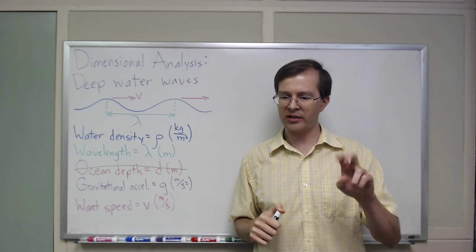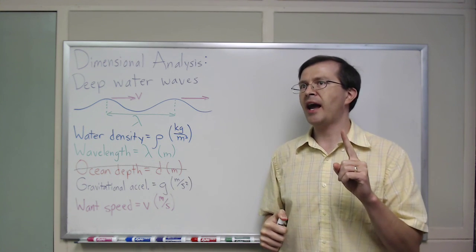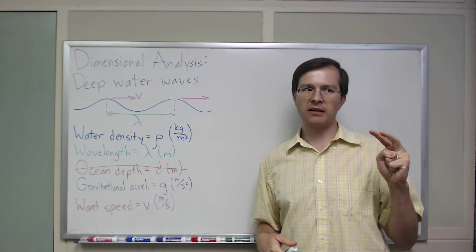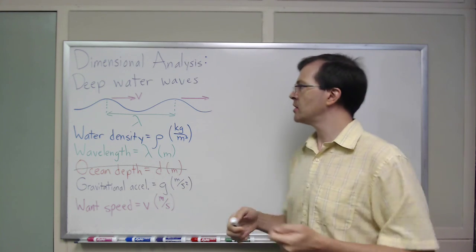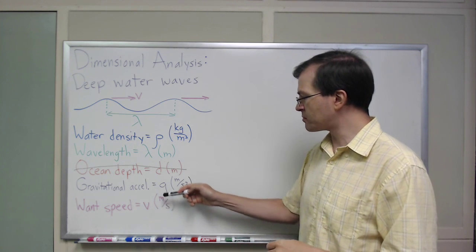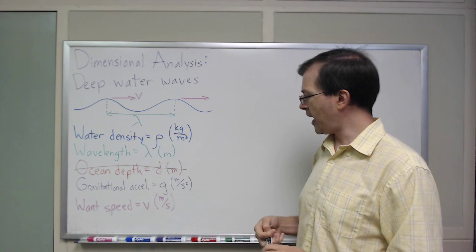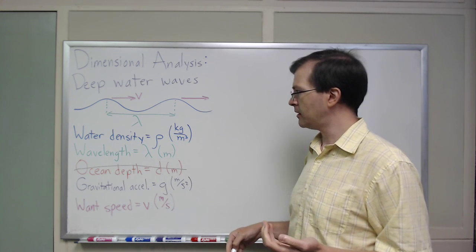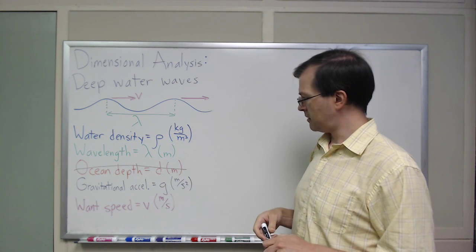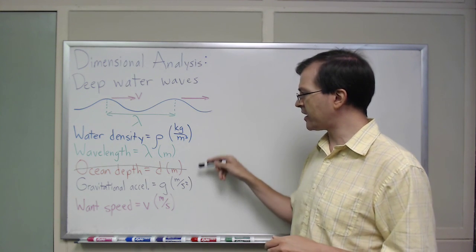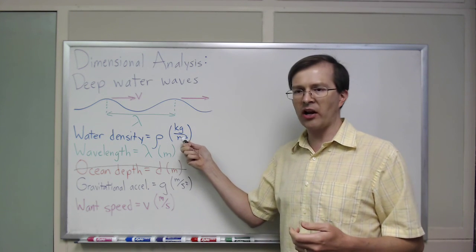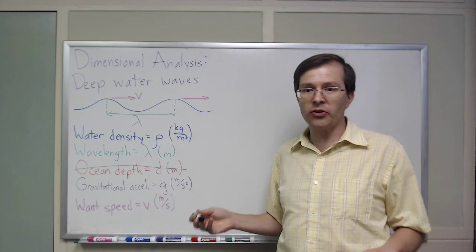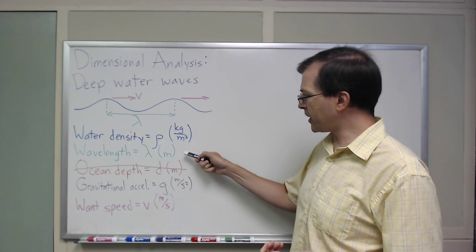I'm going to show you two ways of doing this dimensional analysis. One is intuitive and quick but can be tricky if you don't see how to start. The other is a bit tedious — brute force — but it will always get there. So the intuitive way: I'm trying to build meters per second out of rho, lambda, and g. Meters per second has units of meters and seconds, but it doesn't have any kilograms in it. Density has kilograms in it, and none of the other quantities do. There's nothing to cancel it out, so if I include any factor of density my equation can't possibly work. So density must not be included.